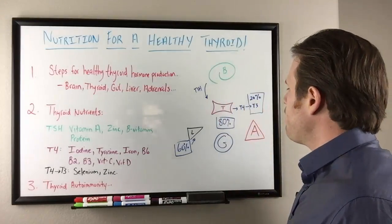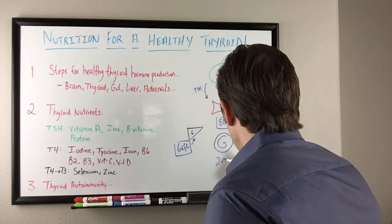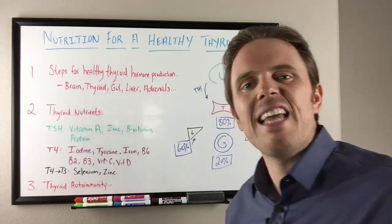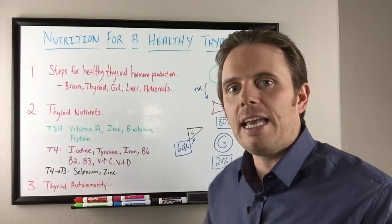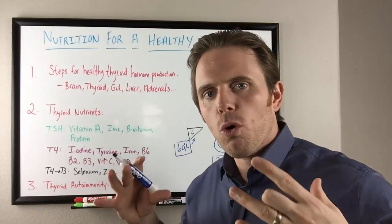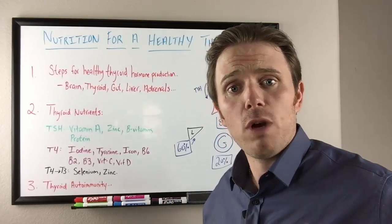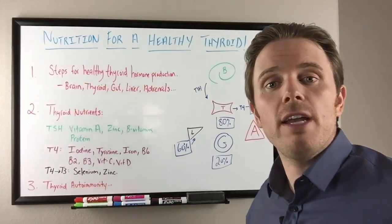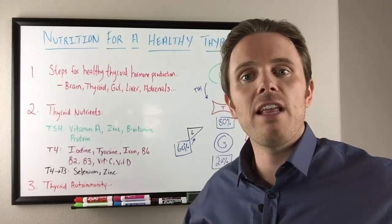Next we see gut bacteria. We need good healthy gut bacteria because about 20% of conversion happens in and around the gut with the acetic acid or various sulfatase enzymes. These enzymes are important at taking inactivated T3 and activating it. If you have dysbiosis or imbalances in gut bacteria from various infections, pathogens, or even small intestinal bacterial overgrowth, that can decrease your gut's ability to activate thyroid hormone.